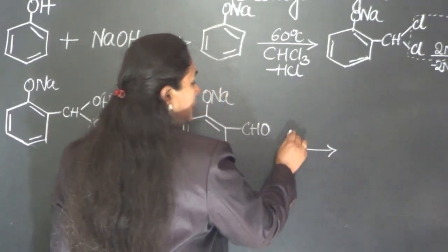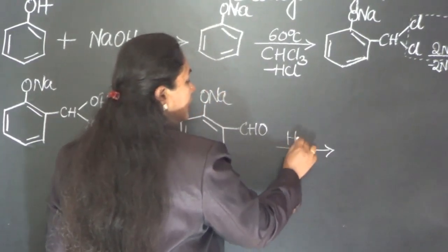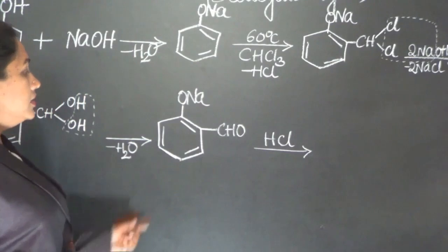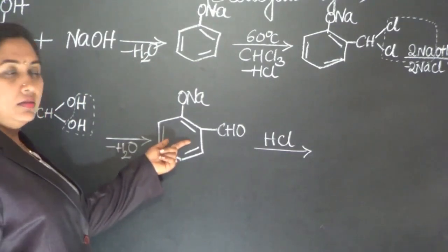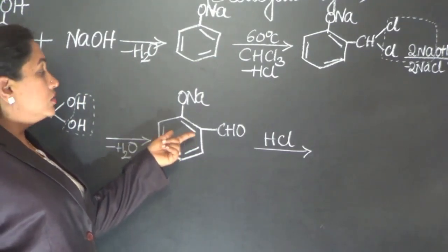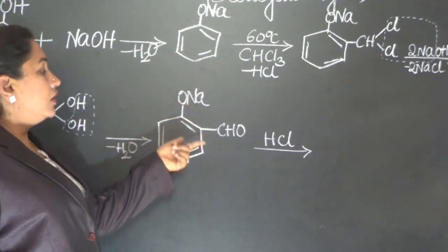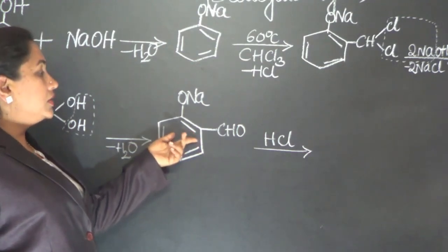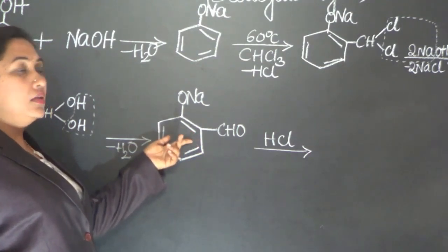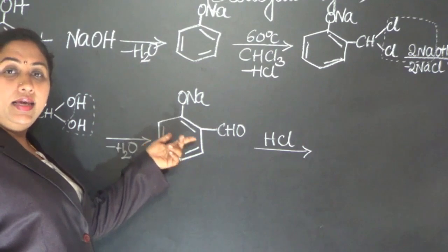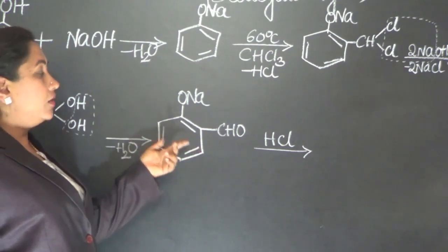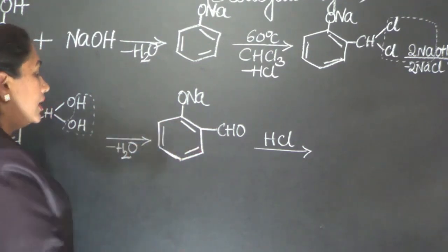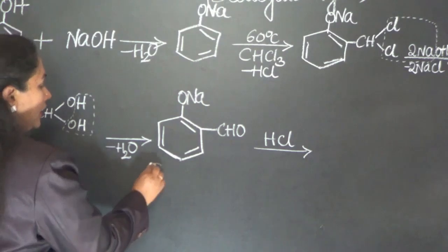After the loss of water, the solution is acidified with HCl. The compound formed at this stage — with ONa and CHO on the benzene ring — is called the sodium salt of salicylaldehyde, also known as sodium salicylate.